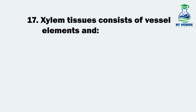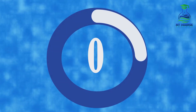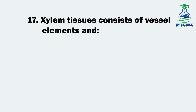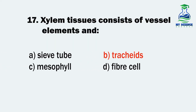Question 17. Xylem tissues consist of vessel elements and: A. Sieve tube, B. Tracheids, C. Mesophyll, or D. Fiber cells. Let us see the correct option. It's B. Tracheids.